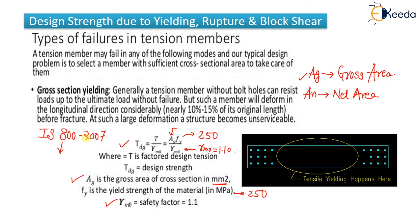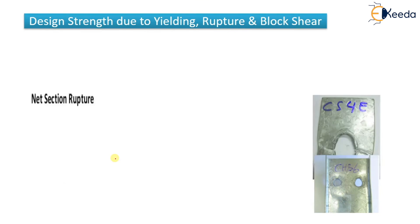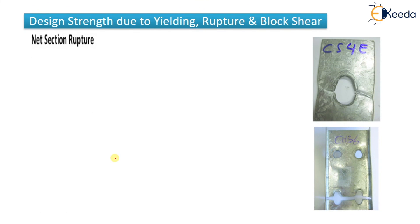This formula comes from IS 800:2007, which is the code used throughout the design of steel structures syllabus. The chapter on design of tension members in that code contains all these formulas along with definitions of Ag, Tdg, and the associated values.